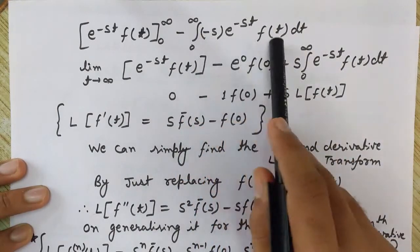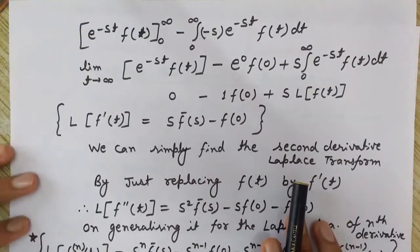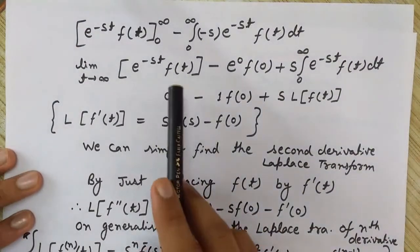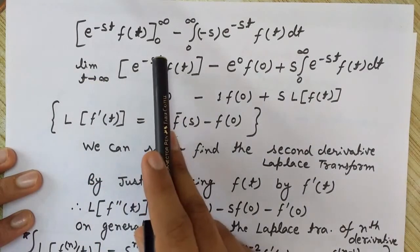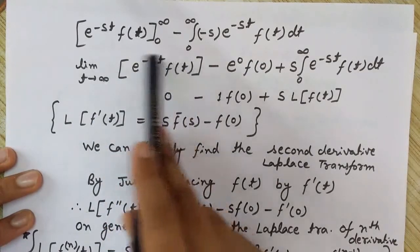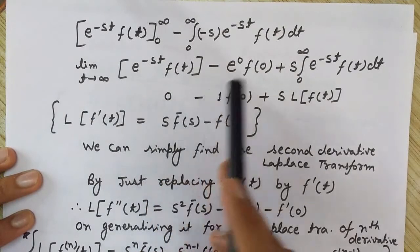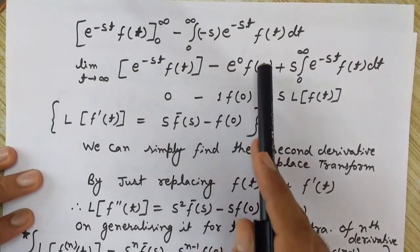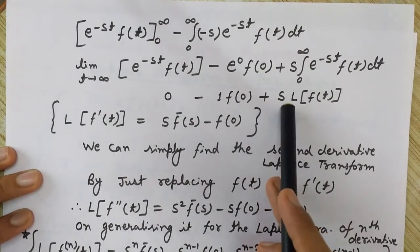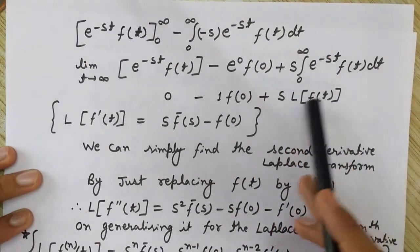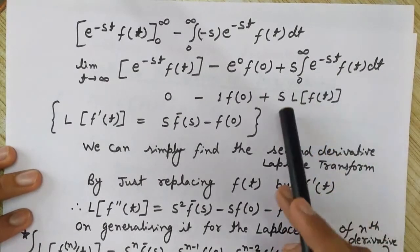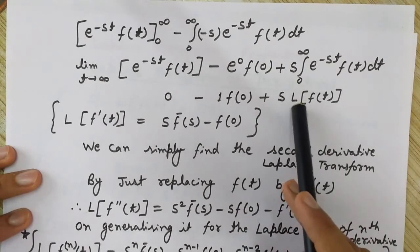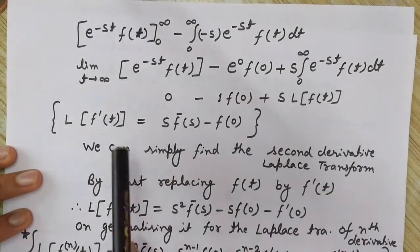If we place infinity in place of t, we get e^(−∞) which is 0. So this term is 0. Minus e^0 is 1, so we get minus f(0). Plus s times the integral of e^(−st) · f(t) dt from 0 to infinity — which is, by definition of Laplace transform, just the Laplace transform of f(t), i.e., f̄(s).